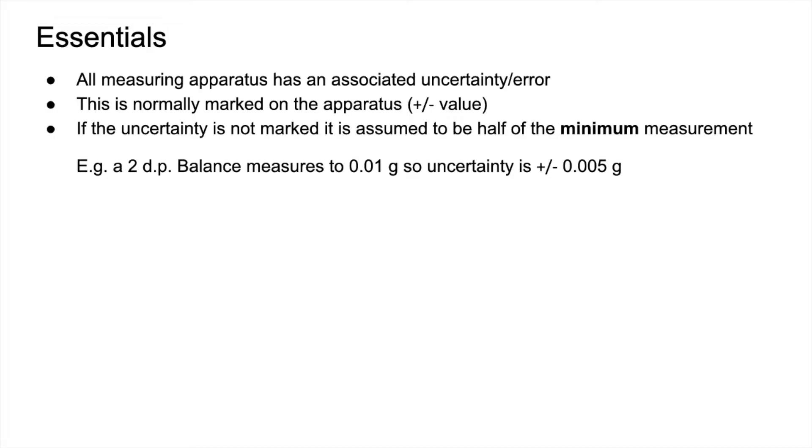So an example of that, if you've got a two decimal place balance that measures to 0.01 grams, the uncertainty is half of that 0.01 gram, half of a hundredth of a gram, so it's going to be plus or minus 0.005 grams.